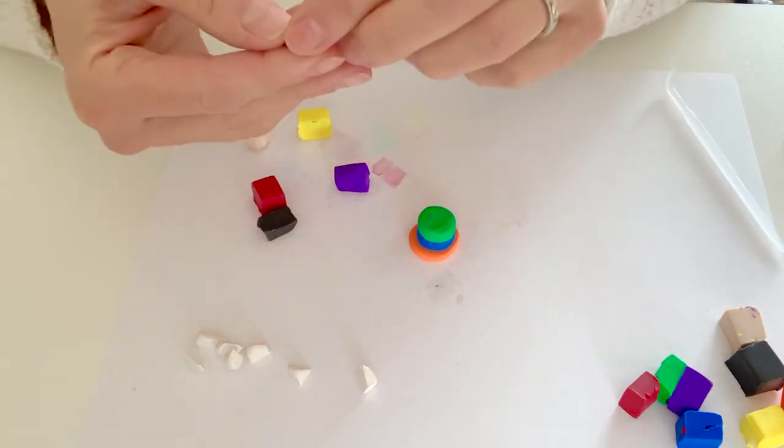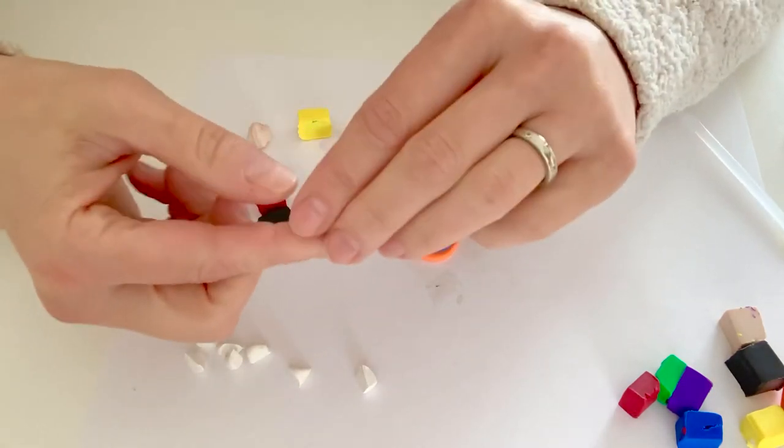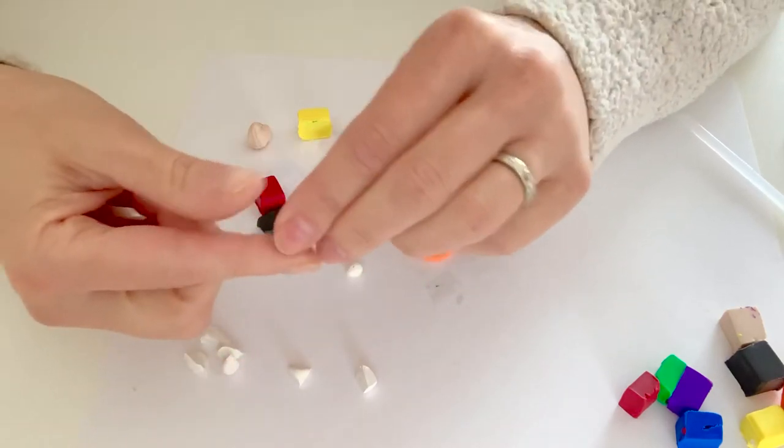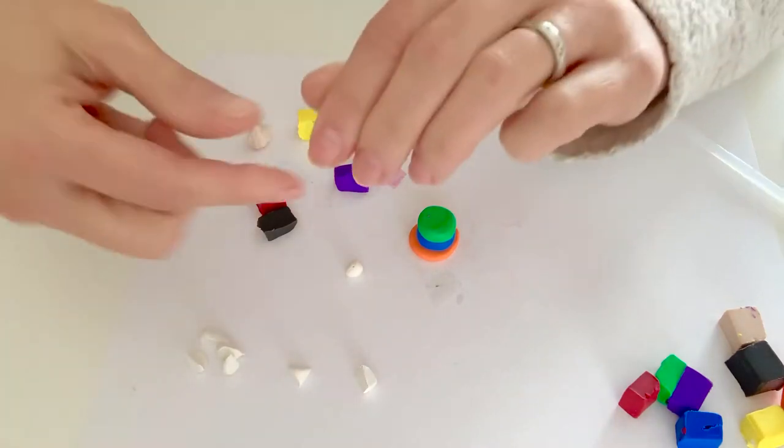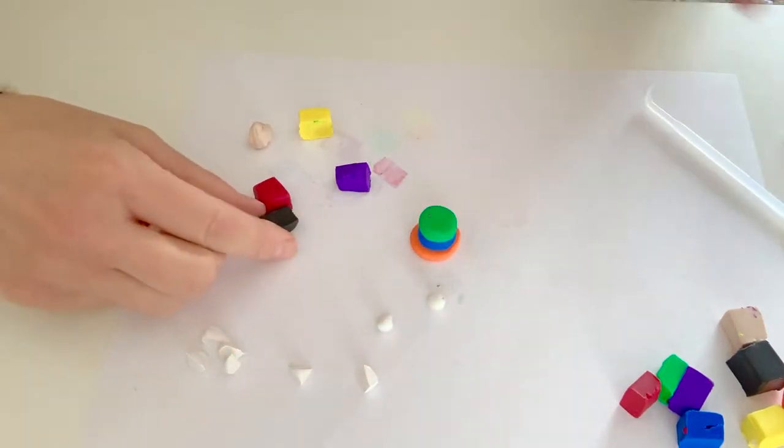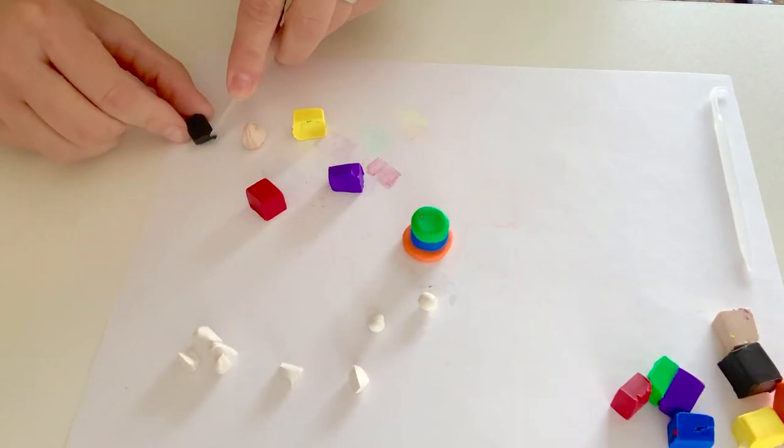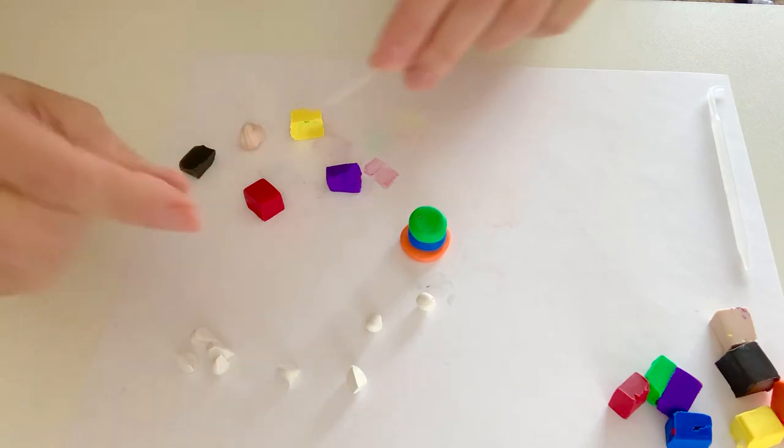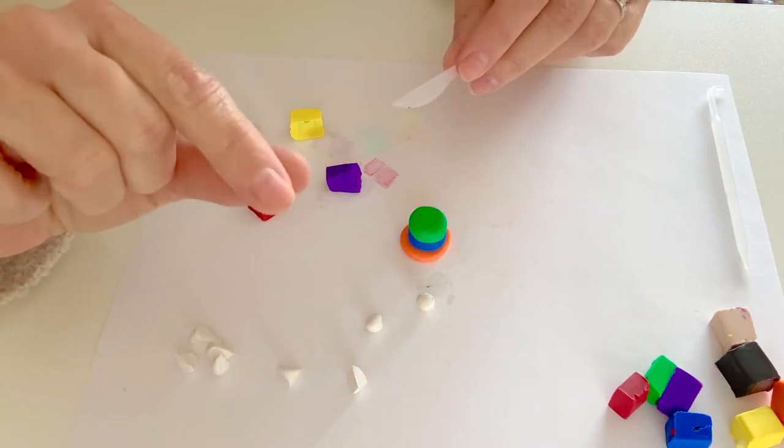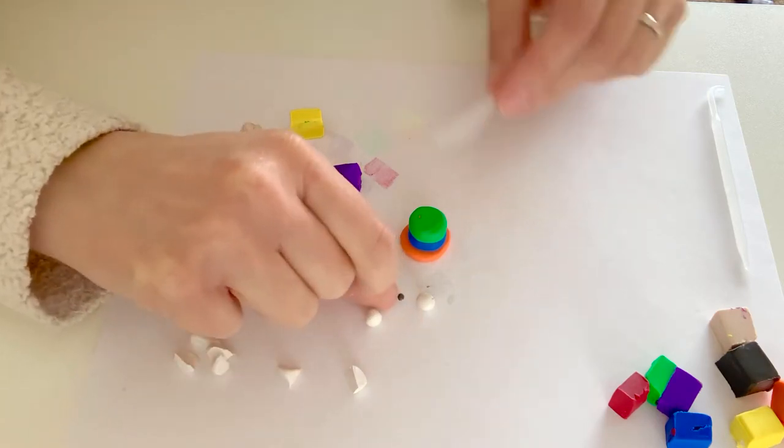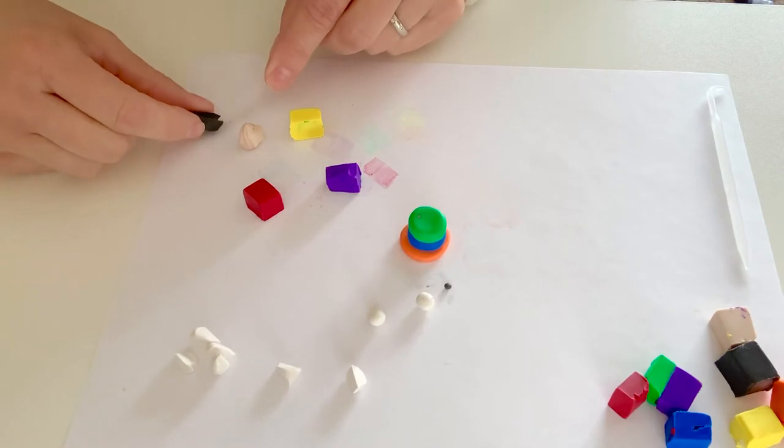I'm going to take a little piece of white, roll it into a ball. Take a second piece of white, roll it into a ball. I'm going to set those off to the side. And then I'm going to take a tiny, tiny little sliver of black and roll it in between my fingers to make it into a ball. I'm going to set that off to the side with the white. Those are going to be my eyes.